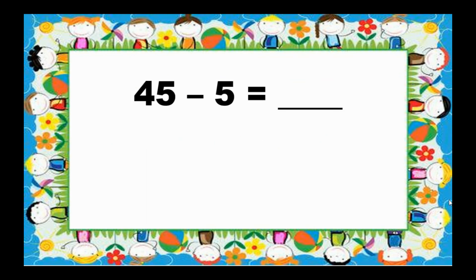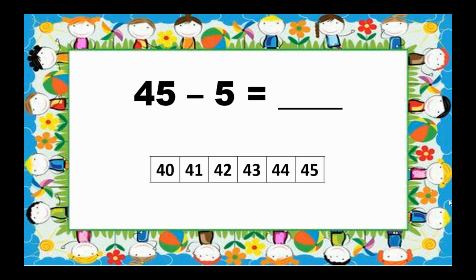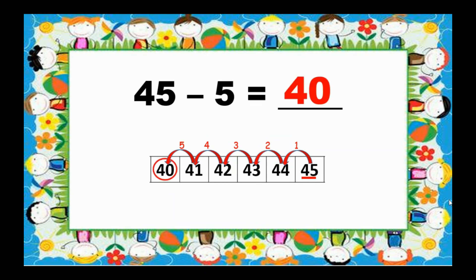Let's have another example. 45 minus 5 equals blank. 45, 44, 43, 42, 41, 40. So, 45 minus 5 equals 40.